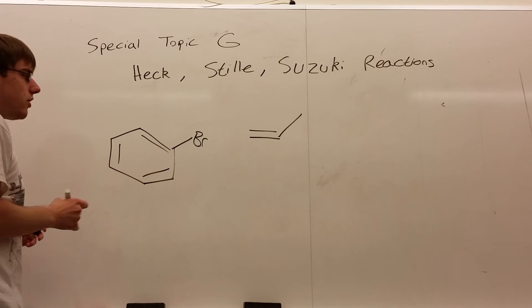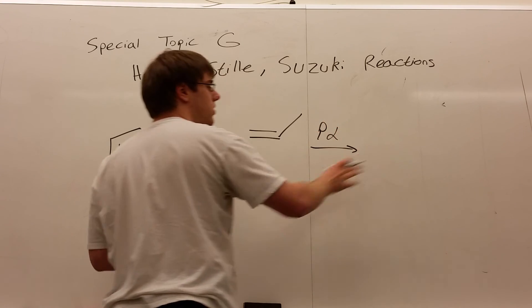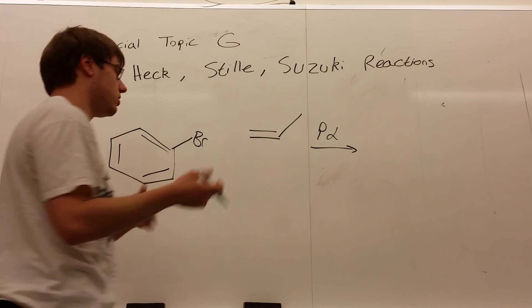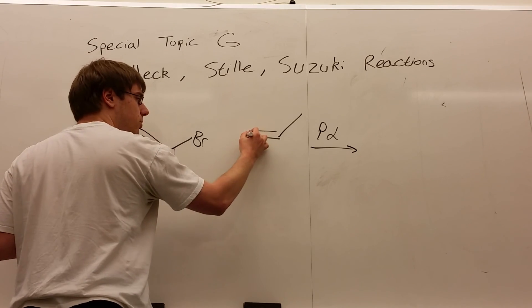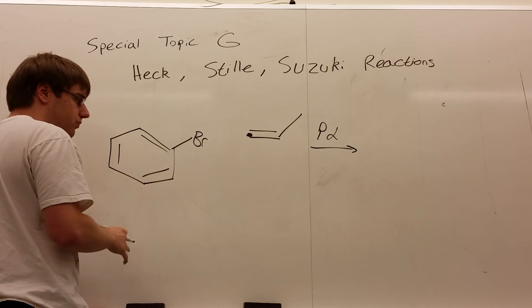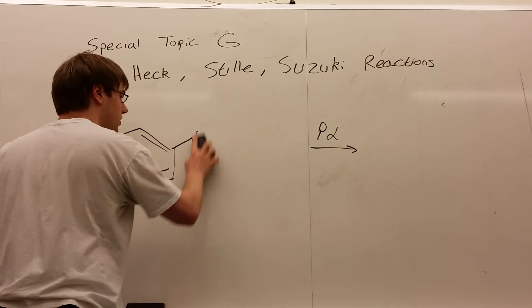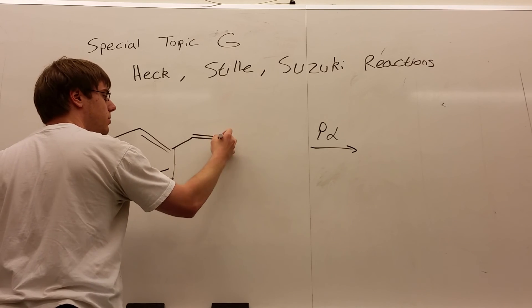All you have to do to figure out the product when you see these two things and then palladium over the arrow, if you see palladium, that's good enough, is you're going to connect the terminal end of one double bond to the end of the double bond with the bromine. Meaning all you have to do is line up these pieces together, erase your bromine, and then stick them on top of each other.